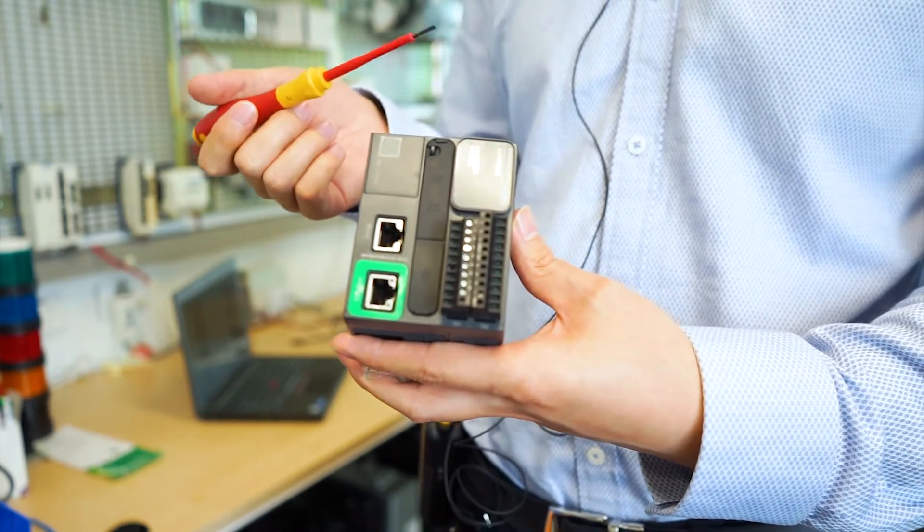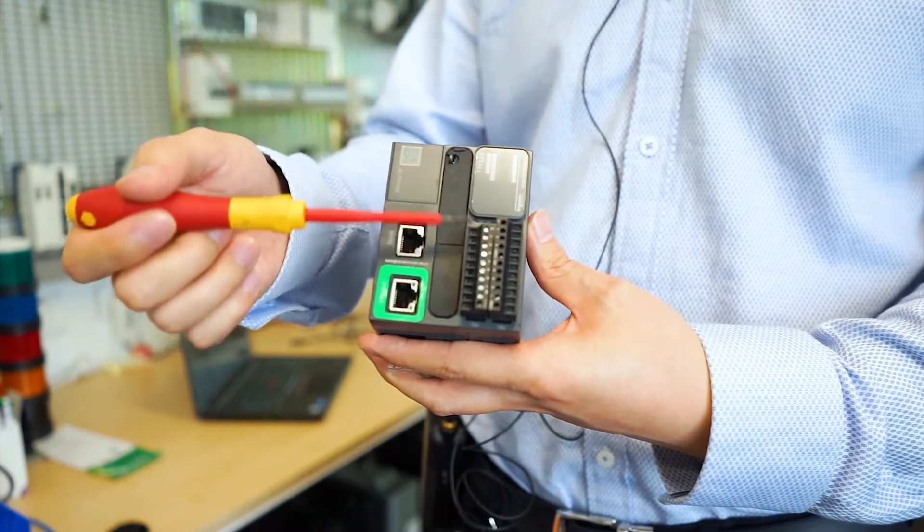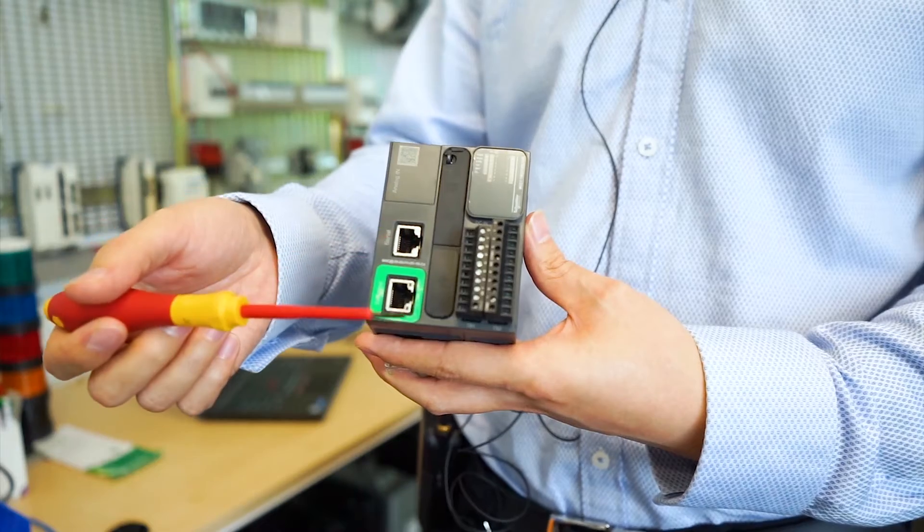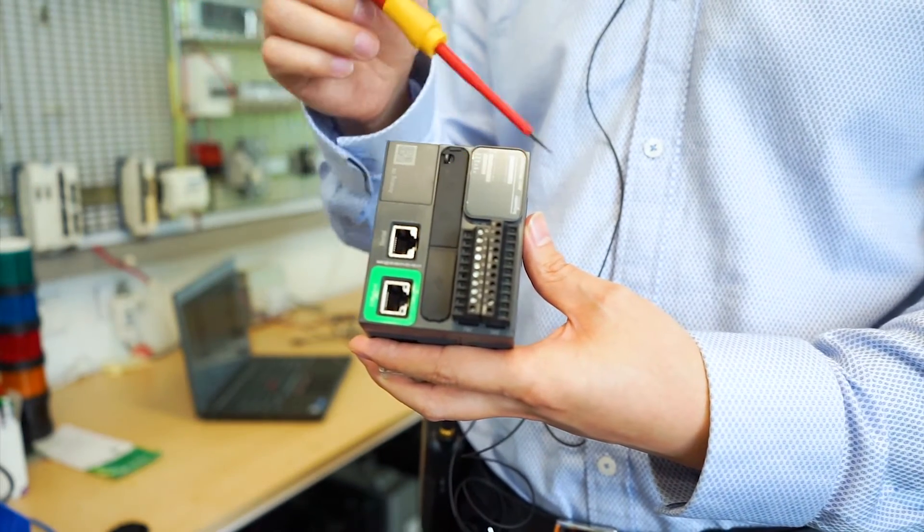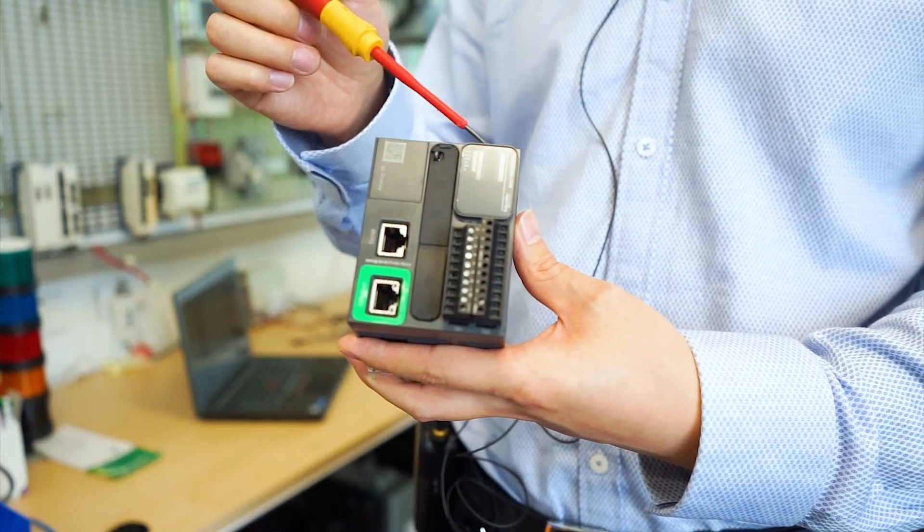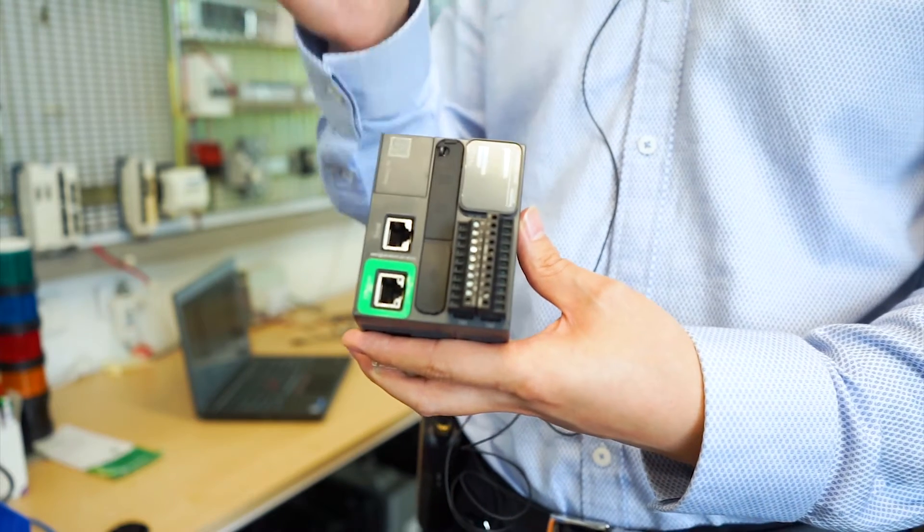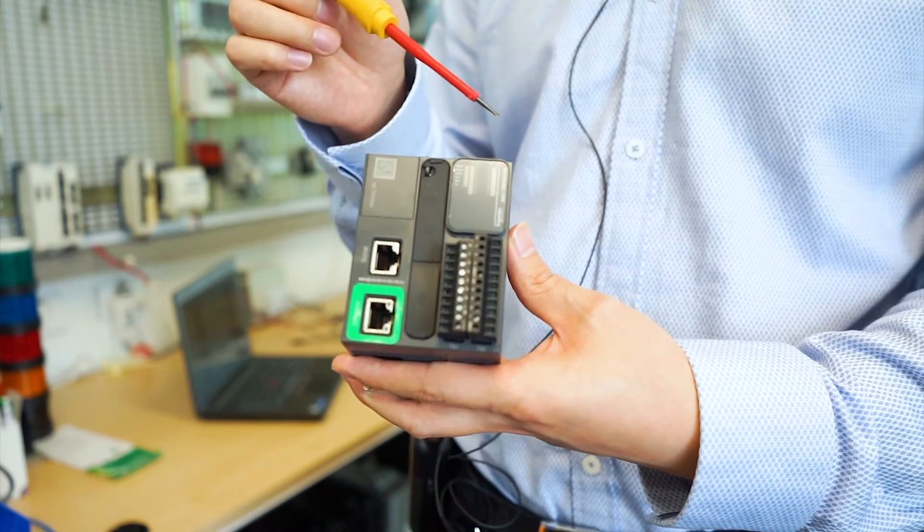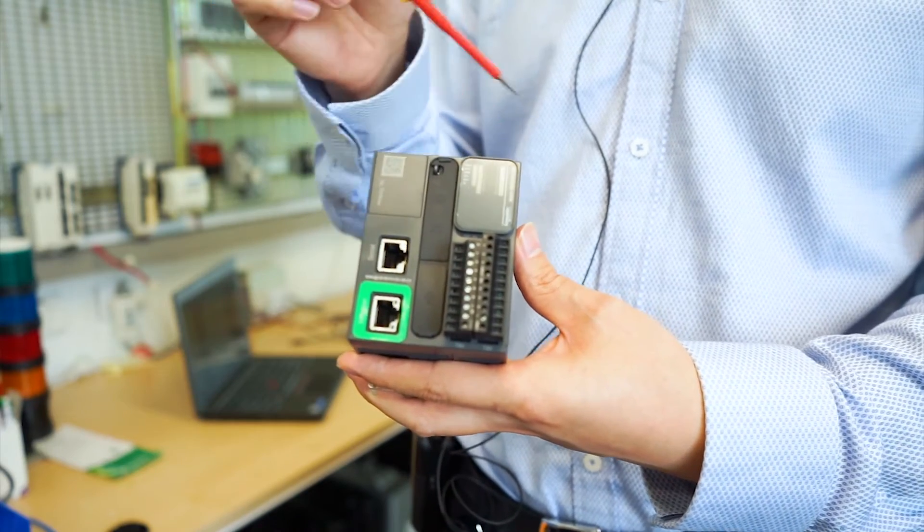As you can see from this controller, we have our I/O screw terminals and also we have this LED panel used to show you the PLC status and also the I/O status. You can go to the hardware menu for the detail information of these status LEDs.